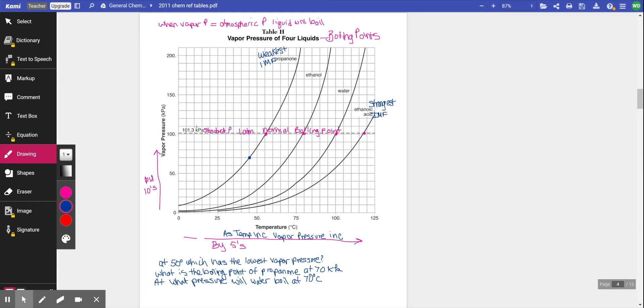All right, so what does this table, so let's look and we got this dashed line. We have 101.3 kilopascals over here. So what does that mean? That is our standard pressure, which is also equal to one atmosphere from table A. So at one atmosphere, or 101.3 kilopascals, our standard pressure, these dots, where these curves intersect that dashed line, are the normal boiling points of these four liquids.